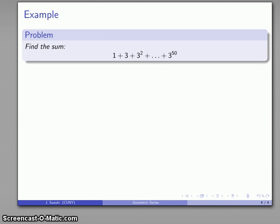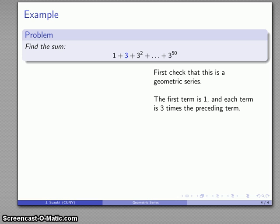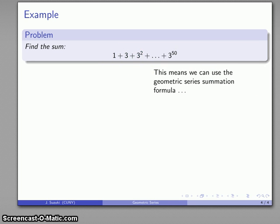So for example, let's consider this sum one plus three and so on up to three to the power of fifty. And the first thing we do want to do here is check to make sure that it's a geometric series. The first term is one. And every term appears to be three times the preceding term. This is three times one. This is three times three. And so on all the way up to the end, which is three times a whole bunch of other things. So again, this is a geometric series, and we could use the geometric series summation formula, but why bother?